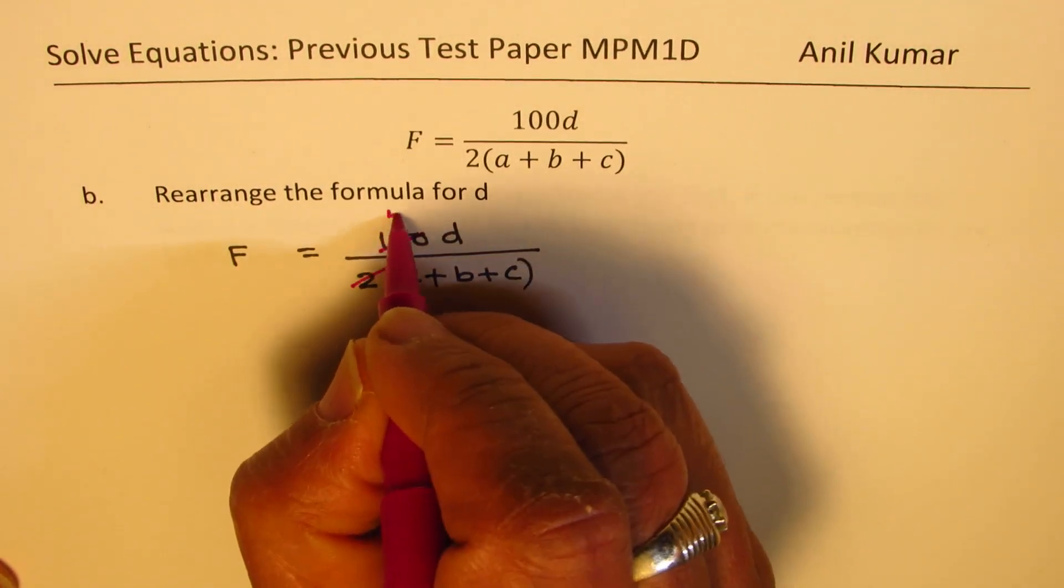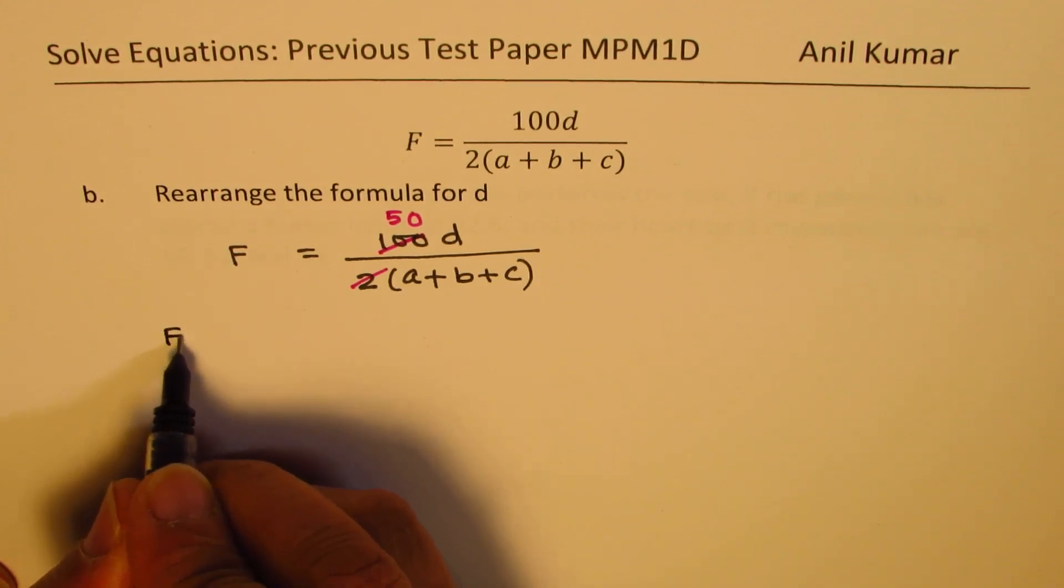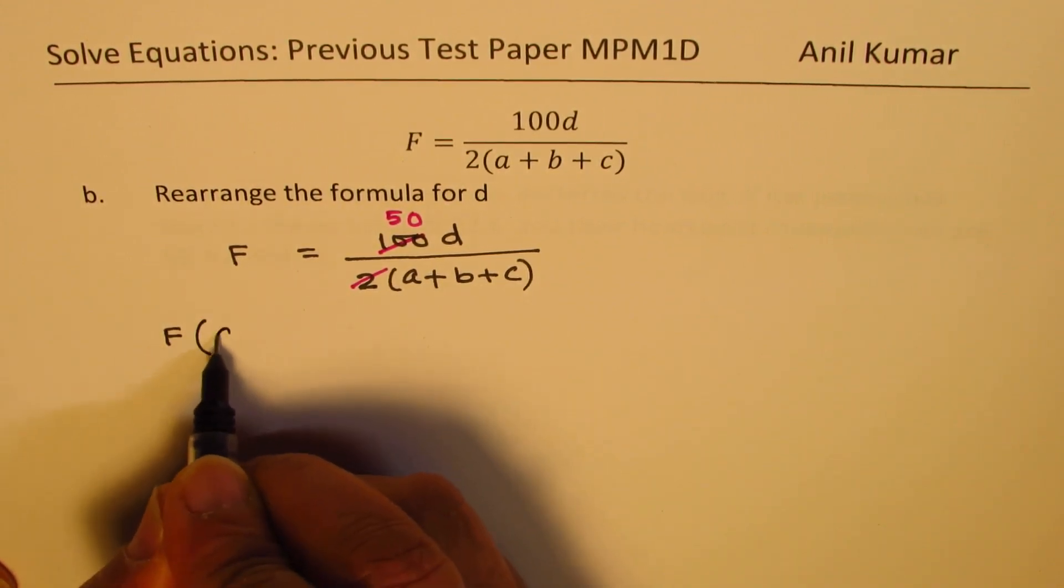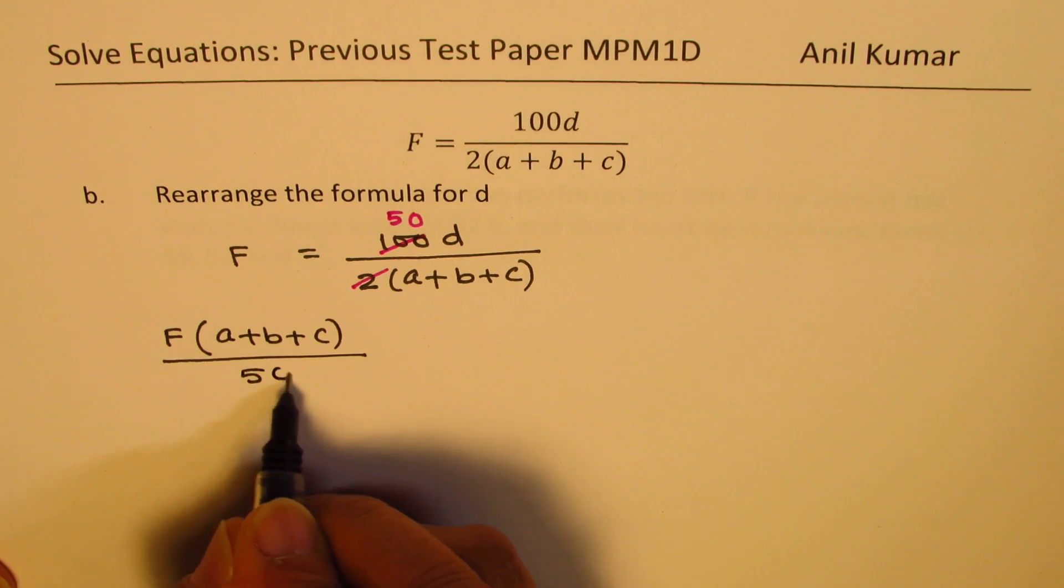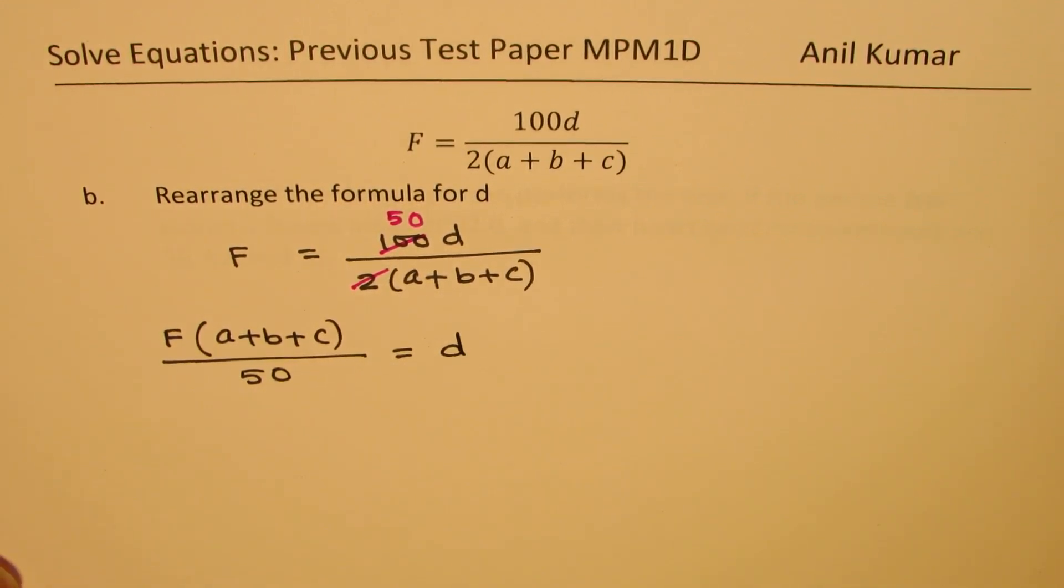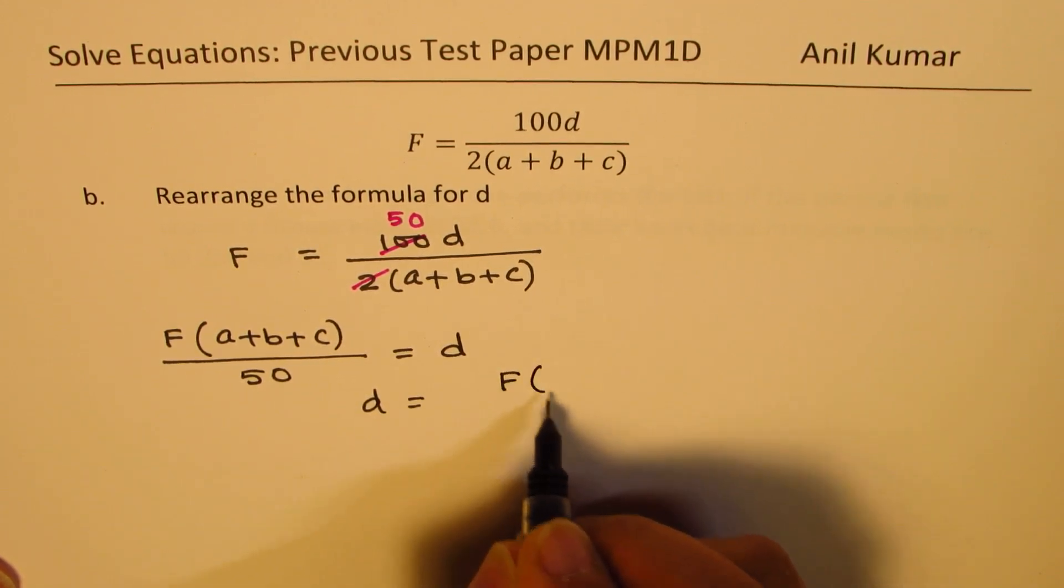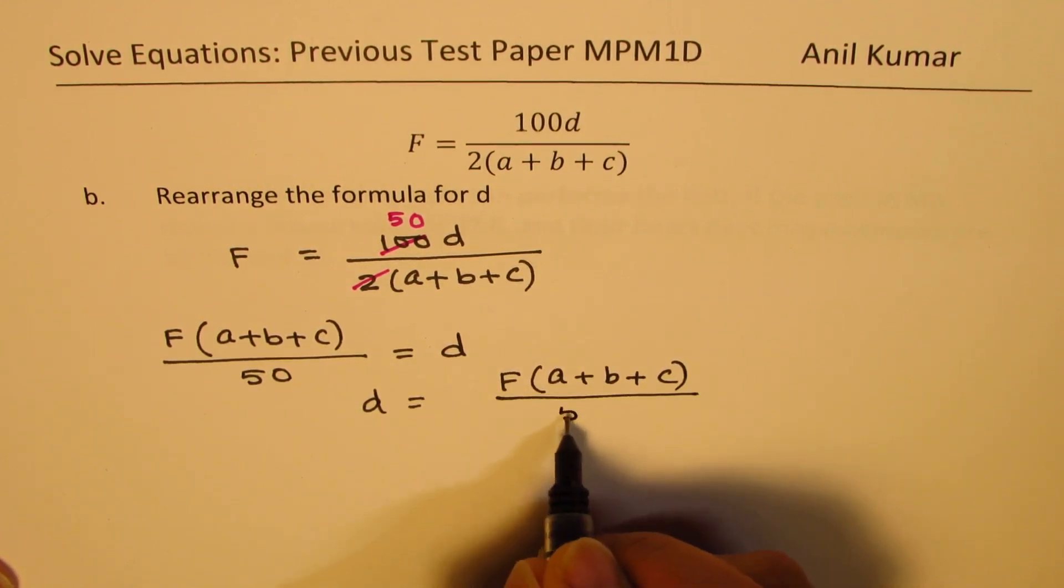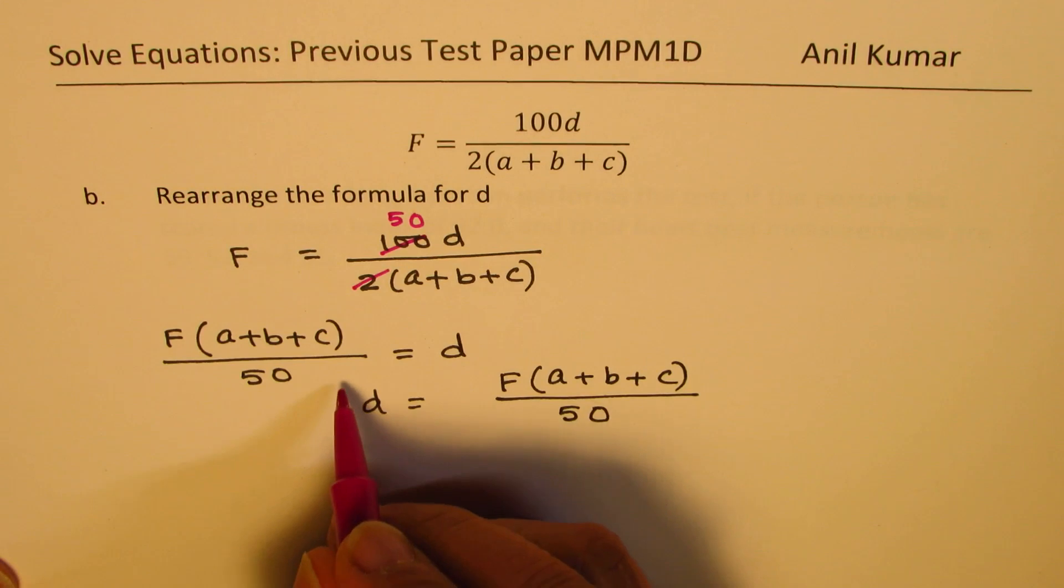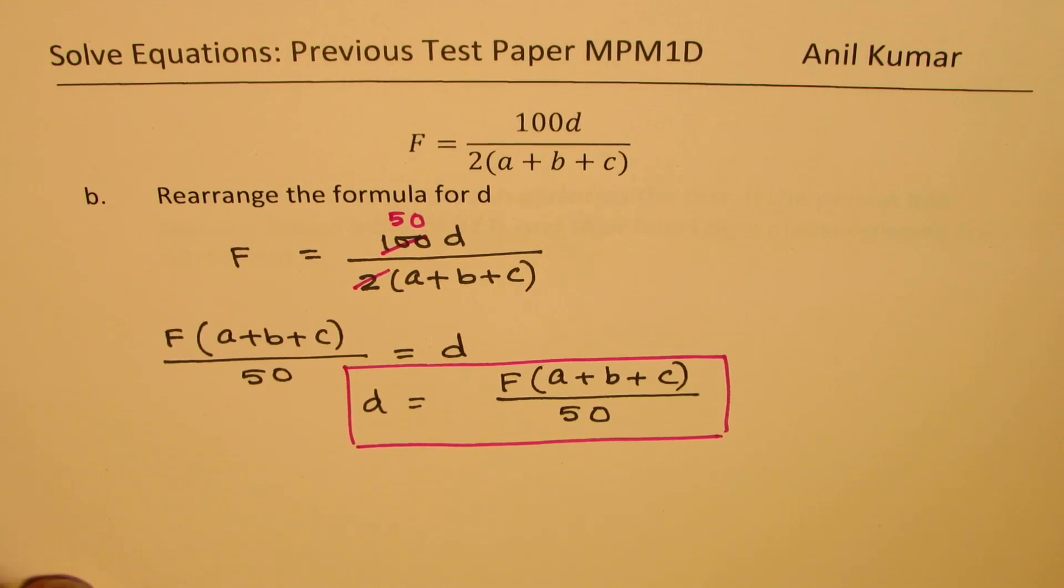So we can actually simplify this first, which goes 50D and then we can cross multiply. So we get F times (A plus B plus C) divided by 50 equals D. So in terms of D, we could write this formula as D equals F times sum of the three ratings divided by 50. So that becomes our rearranged formula to find the value of D. D is the time in seconds to do the exercise.